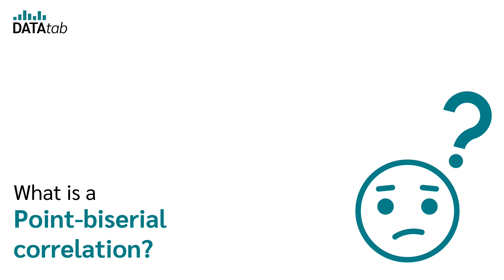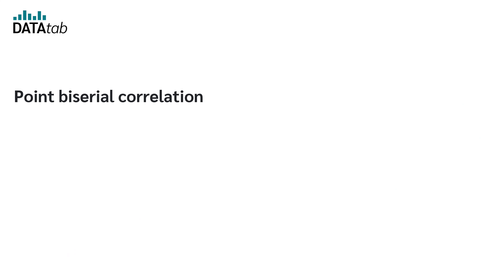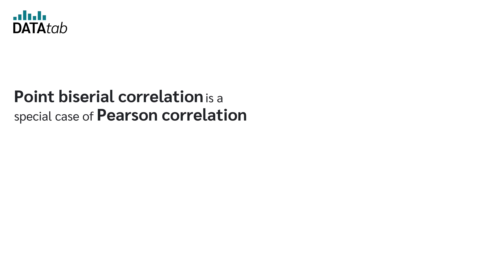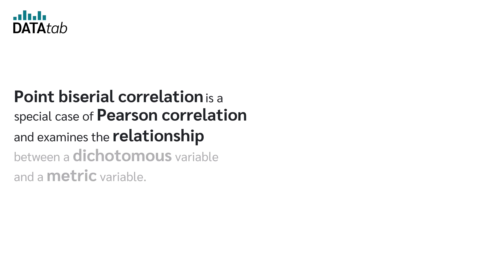What is a point-biserial correlation? Point-biserial correlation is a special case of Pearson correlation and examines the relationship between a dichotomous variable and a metric variable.